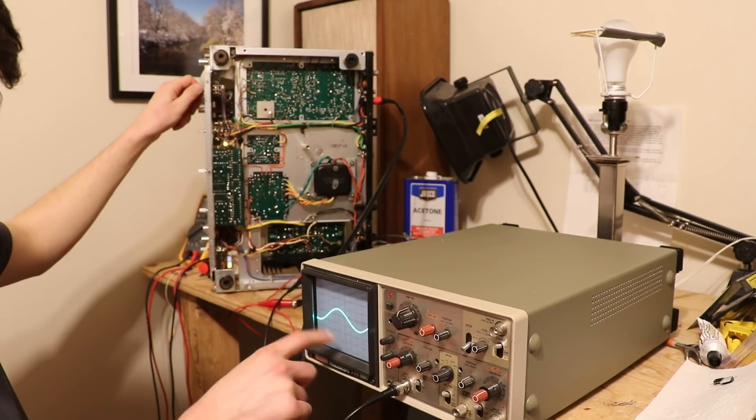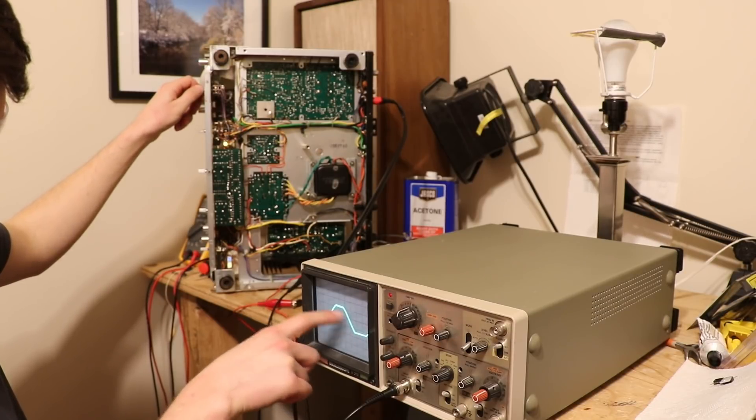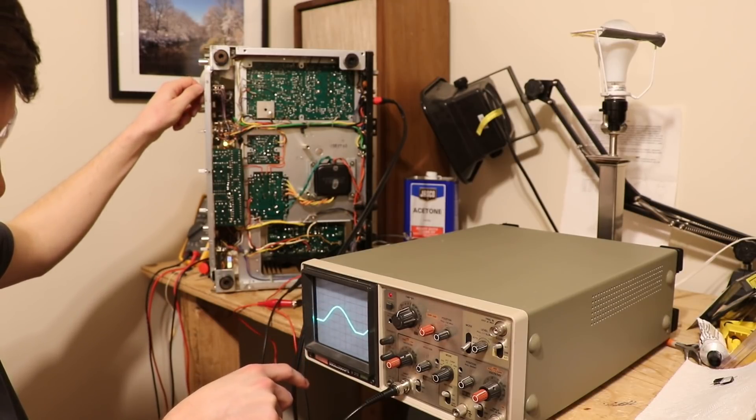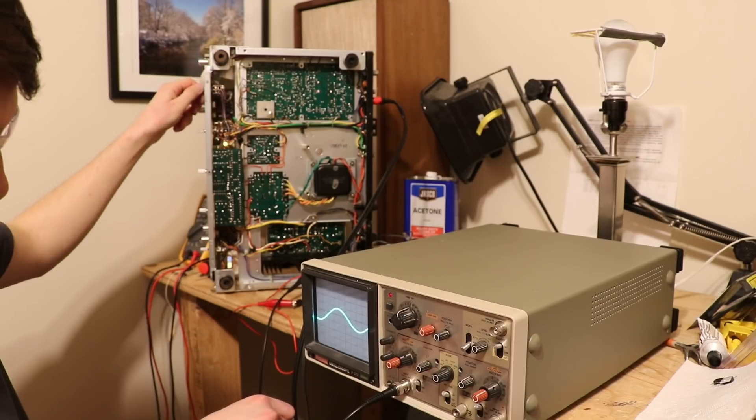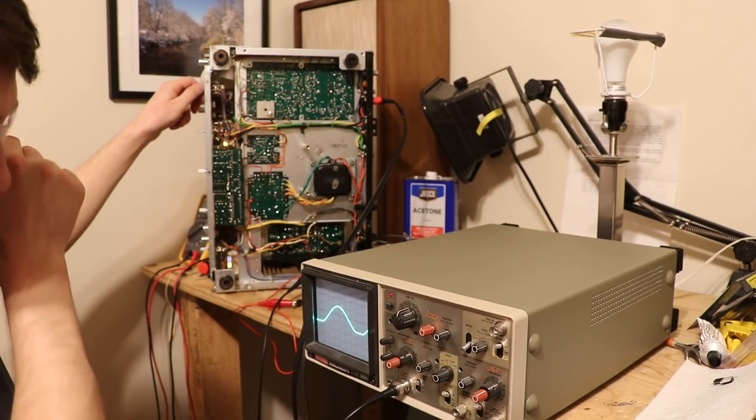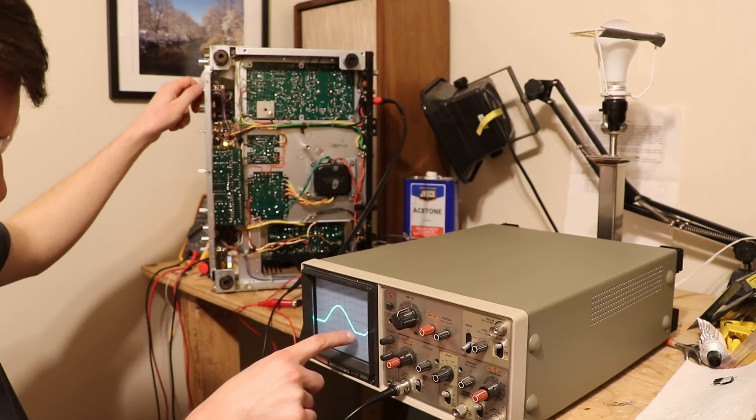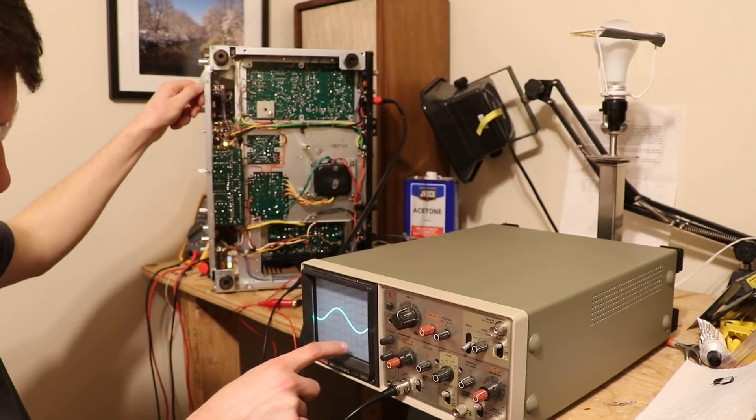This receiver doesn't have an adjustment for the clipping right here, which is kind of interesting. The 2230 does, and that's kind of nice. So, this is just kind of what it is. We clip at the bottom here first, on this channel.